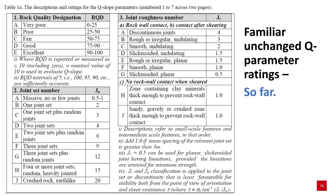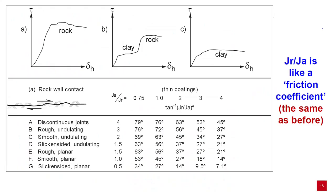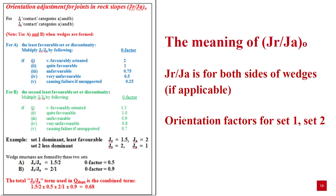These parameters may seem very familiar to Q-system users: RQD, JN, JR, and JA — nothing has changed in these parameters. JR divided by JA is like a friction coefficient, the same as before. The meaning of JR divided by JA multiplied by the O-factor is applied to both sides of potential wedges when applicable.